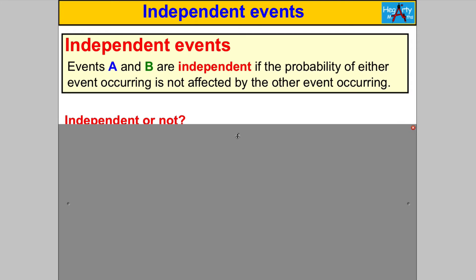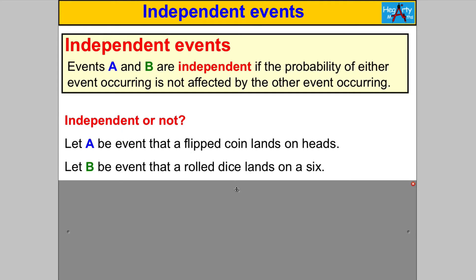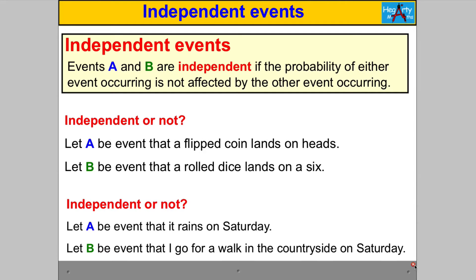Let me give you some examples of events A and B to determine whether they're independent or not. Imagine A was the event that a flipped coin lands on heads, and B was the event that a rolled dice lands on a six. Are they independent? Yes — in no way does the coin flip affect the answer you get when you roll a dice. So A does not affect B and B does not affect A.